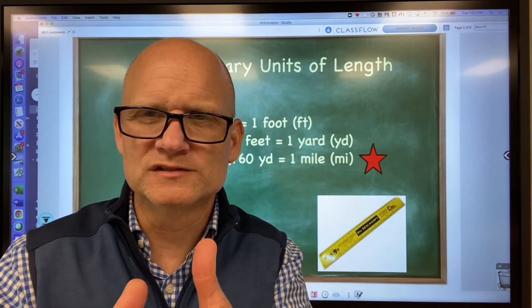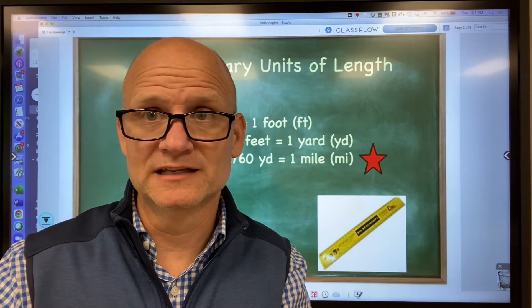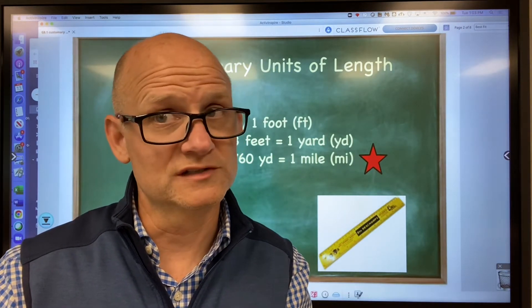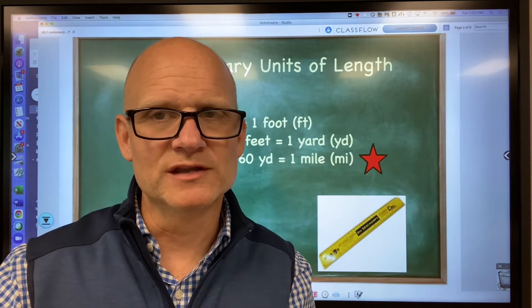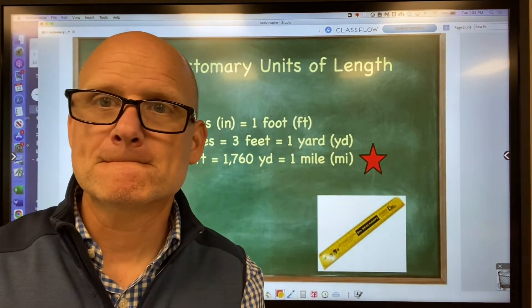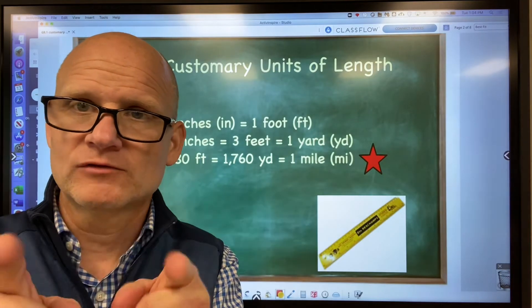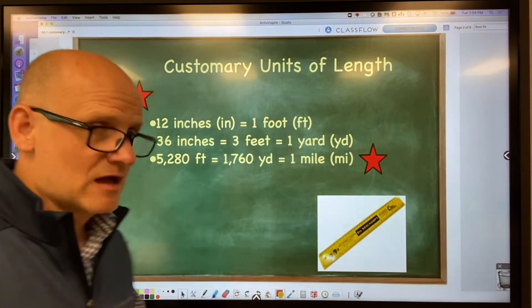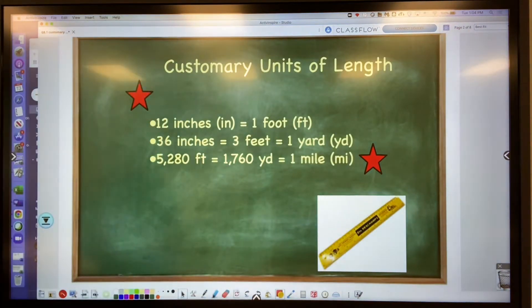For example, you probably know there's 12 inches in a foot, three feet in a yard, and 36 inches in a yard. You might not have remembered this, but there's 5,280 feet in a mile, which means there's 1,760 yards in a mile. Write that down. Write all this information down. We need to know the equivalent units for these units of length.